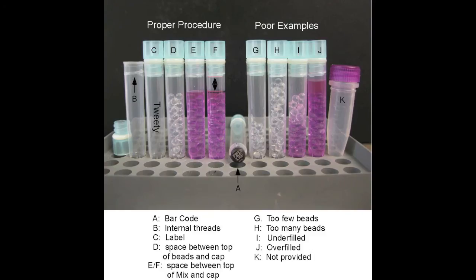This diagram, included in your protocol, shows both proper and improper examples of tube filling. Example C is a good example of how to label your tubes. Example D shows you the proper amount of beads to add to the tube, with E and F denoting the proper amount of liquid added to each tube. Note the spacing. Examples G and H denote improper amounts of beads to place in the tubes, with I and J showing you the improper way to fill them. It is important that the amount of liquid you add both covers the beads and is not too high in the tube.